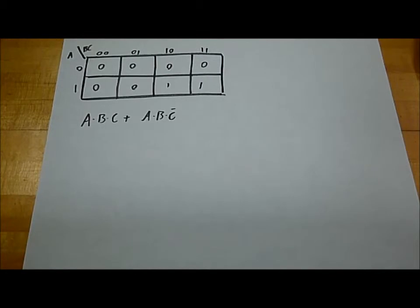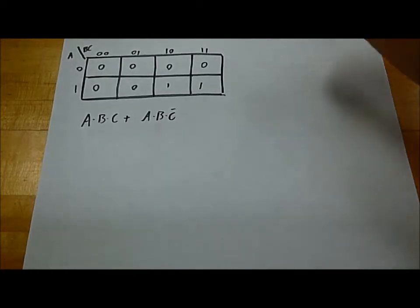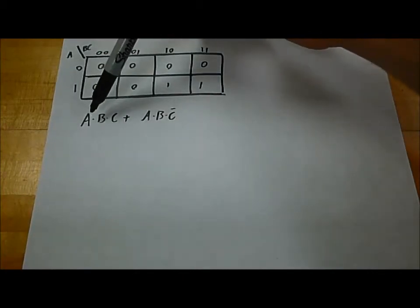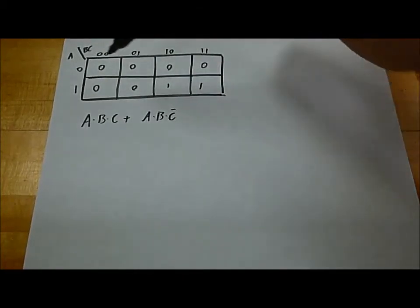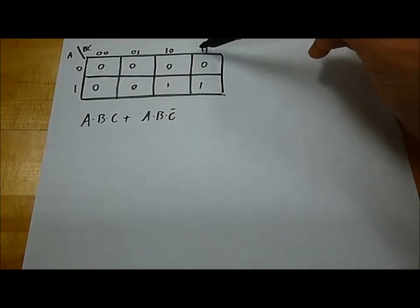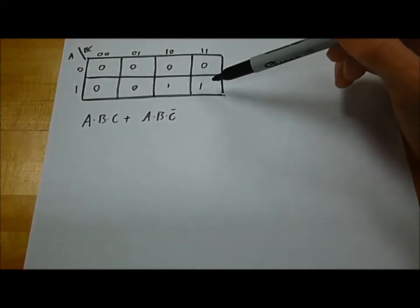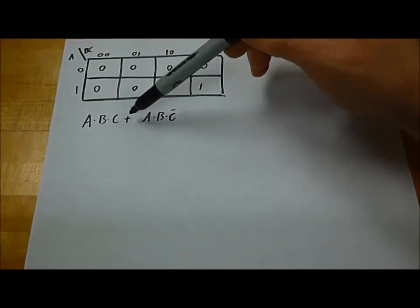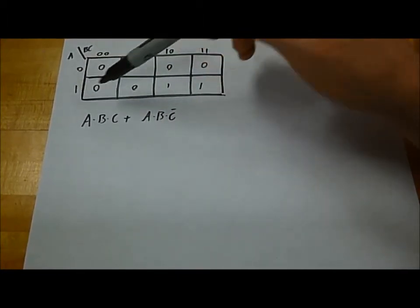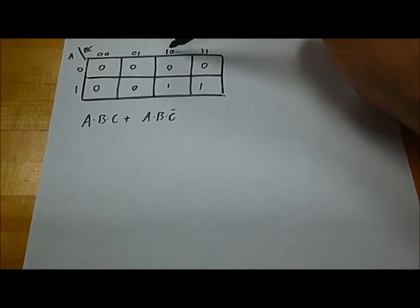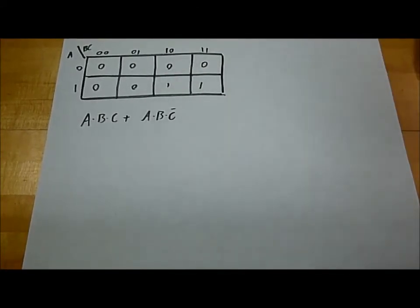Now, let's look at this Karnaugh map. This is only a 3-input Karnaugh map, and I've written the extremely verbose equation underneath of it. If we look at this, A and B and C, we'll say when A is 1, B is 1, and C is 1, we have a 1. Or, A and B and C̄, A is a 1, and B is a 1, and C is a 0, we get a 1.